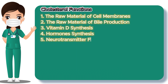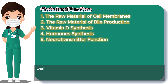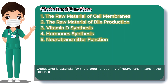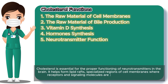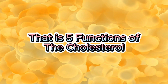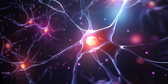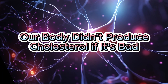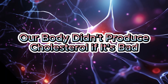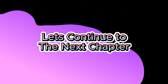Number 5: Neurotransmitter Function. Cholesterol is essential for the proper functioning of neurotransmitters in the brain. It helps form lipid rafts — specialized regions of cell membranes where receptors and signaling molecules are concentrated — facilitating communication between nerve cells. Those are the 5 functions of cholesterol. Cholesterol plays an important role in our body, and our body doesn't produce cholesterol, including LDL, without good reason.